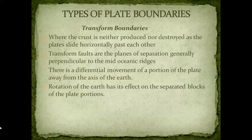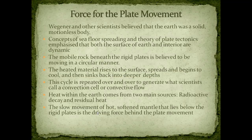So we have seen three types of movement: divergent, where new crust is generated as plates move away from each other; convergent, where one plate slides down beneath the other creating a subduction zone; and transform, where crust is neither created nor destroyed as plates slide past each other in the horizontal direction. Now let us talk about the rate of plate movement.